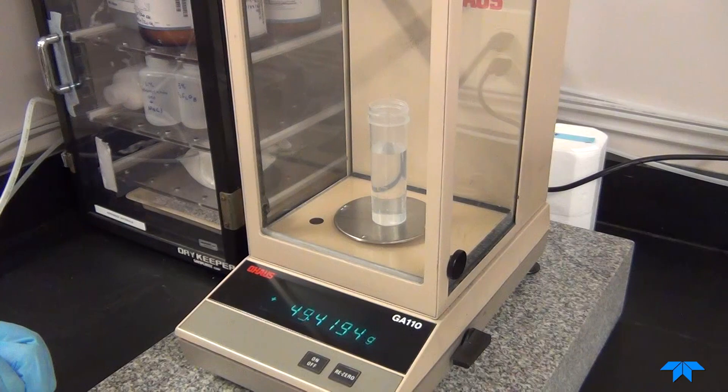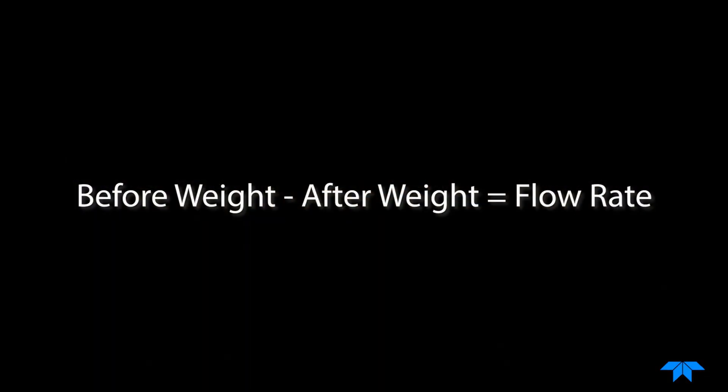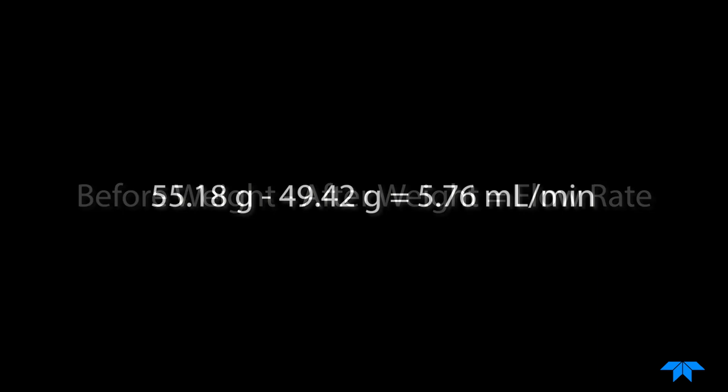To determine the uptake volume, subtract the after weight from the before weight. In our case, it was 55.8 grams minus 49.42 grams. The stannous chloride reagent flow rate is 5.76 milliliters per minute, right on target.